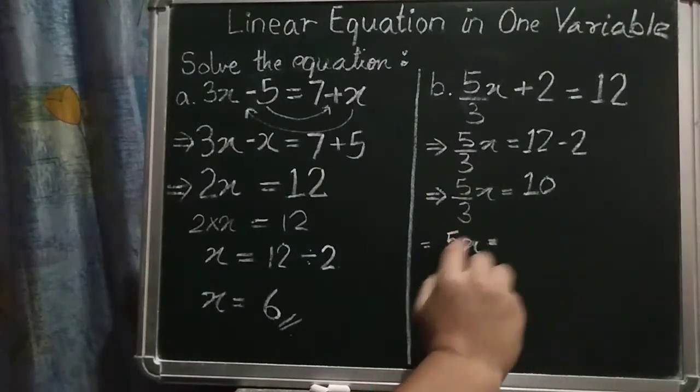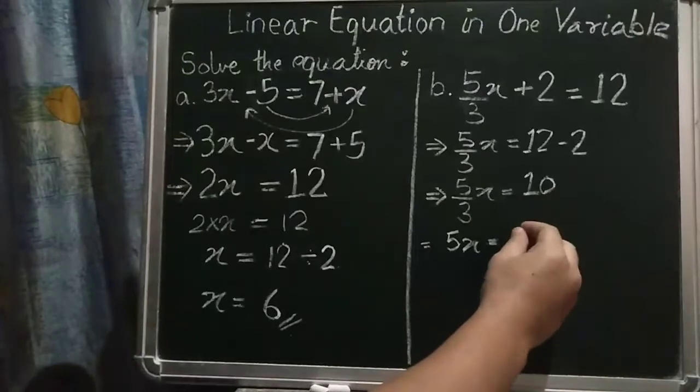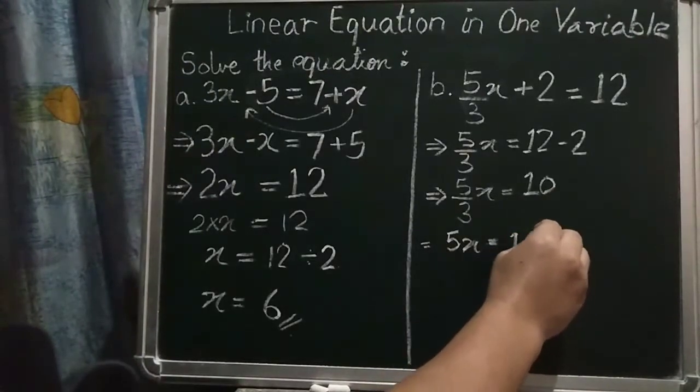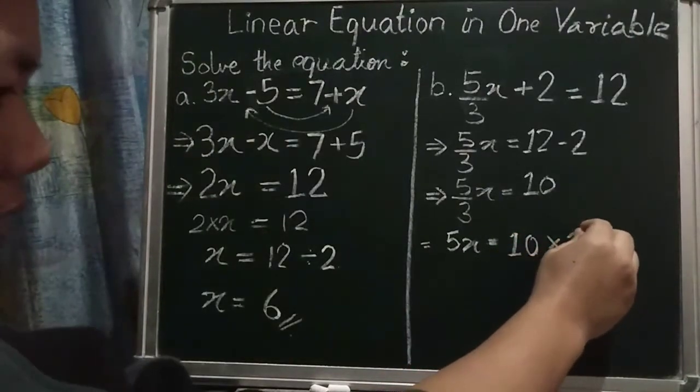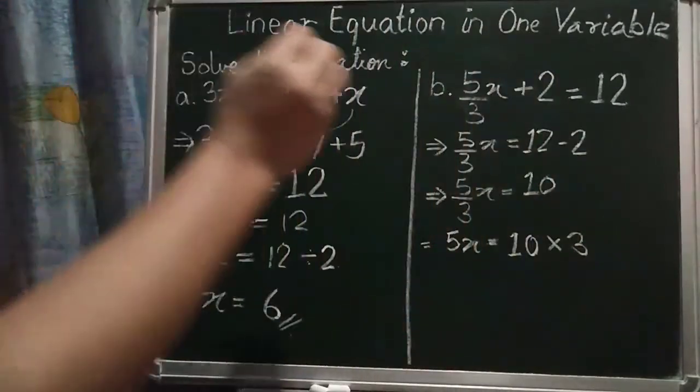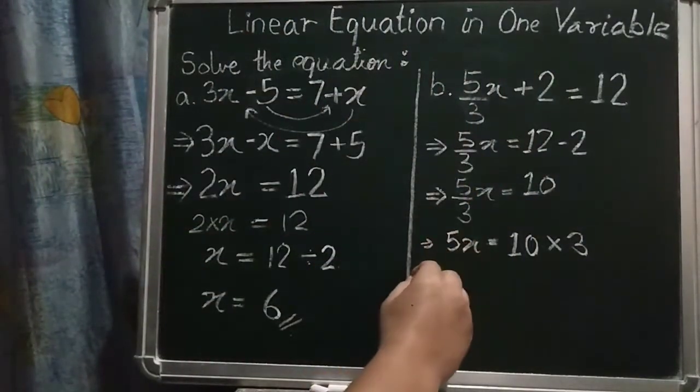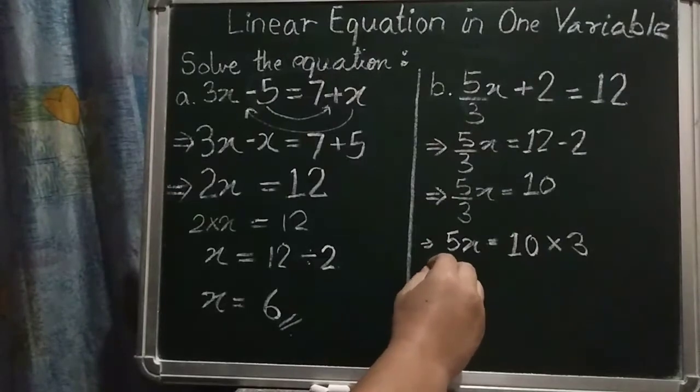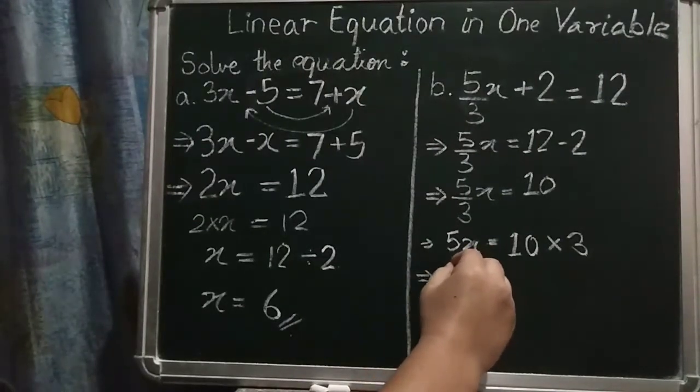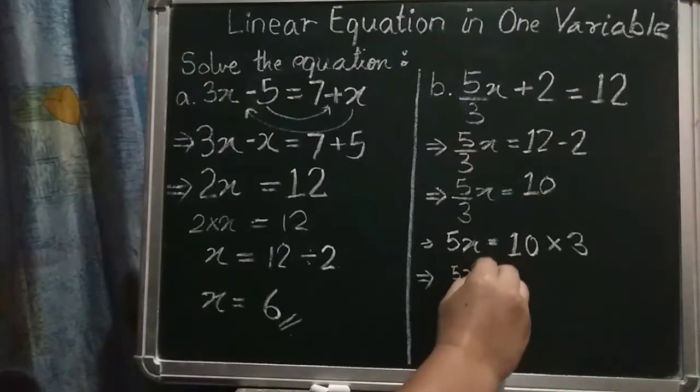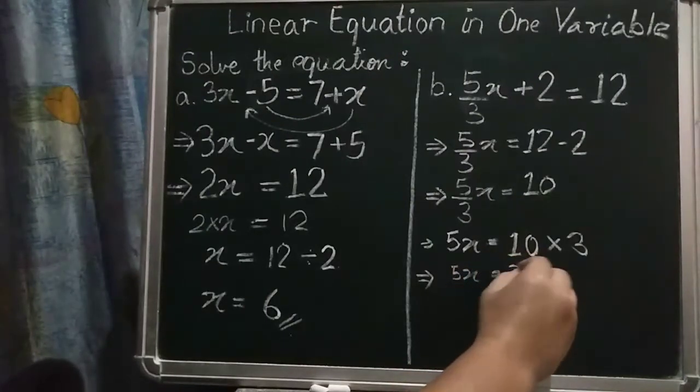So 5x only will remain. This 3 will go in here, and it will become 10 into 3. So answer, so that one is 30. So again, 5x is equal to 30.